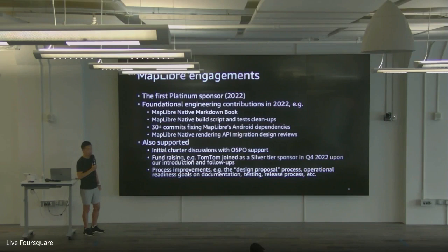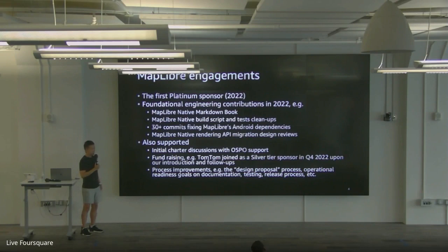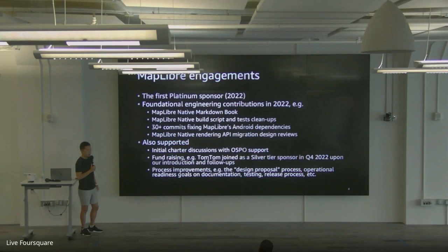We also drove process improvements. We realized a lot of people come in wanting to make bigger changes, not just fix a few lines of code, and it becomes really hard to communicate what they want to do. If you just dump a bunch of code changes for people to review, people get lost and sometimes just disagree. So we proposed — similar to what Kafka does — a design proposal process: if you're making a change bigger than a few pages of PRs, you submit a design proposal first using a simple template, get early buy-in, and then nobody is surprised later. We also focused on operational readiness — improving documentation, testing, and release processes to tell bigger corporate players this project is not just a toy, it's something real you can use in your production system.